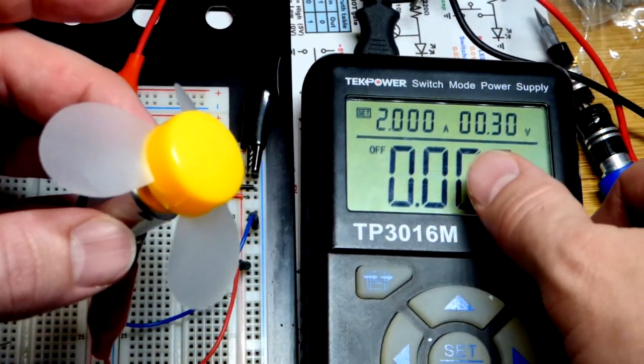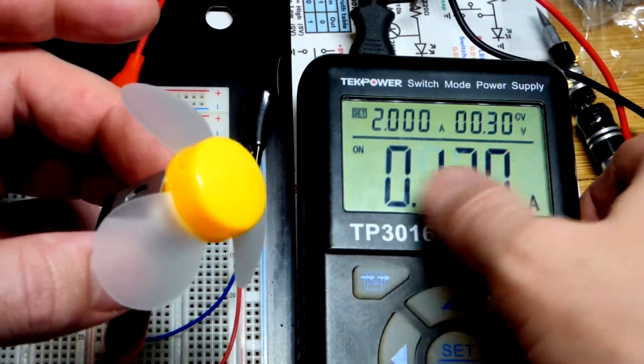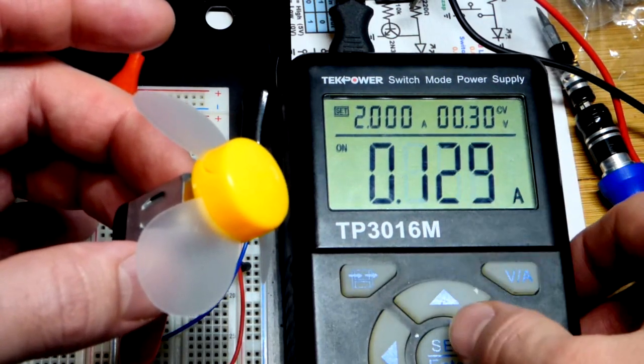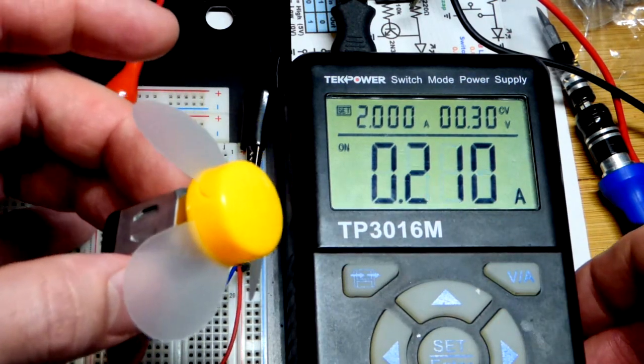So there we have it, pretty straightforward. All we have to do is apply a voltage to get it spinning. So right now it's 0.3 volts, not enough to get it spinning. You can see that we got somewhere around 150 milliamps of current going through the windings, the coils in there.